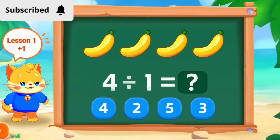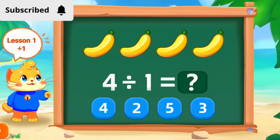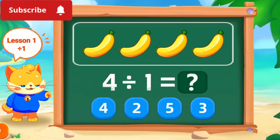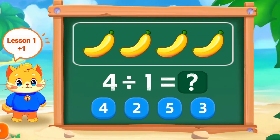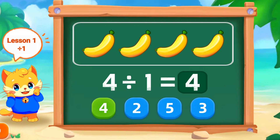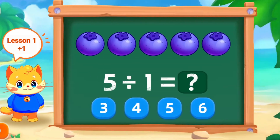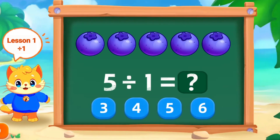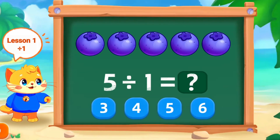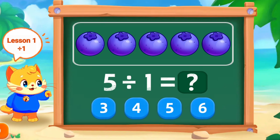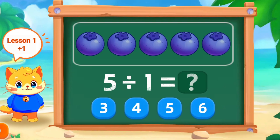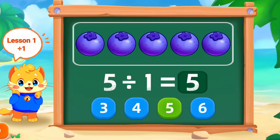4 divided by 1 is 4. Nice. 5 divided by 1 is 5. Perfect.